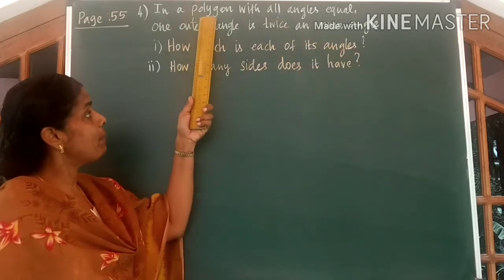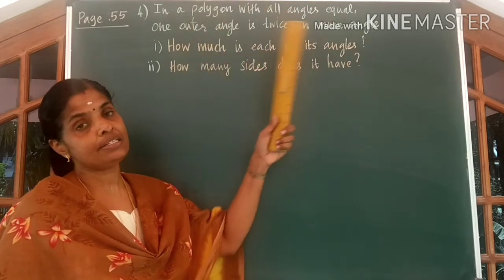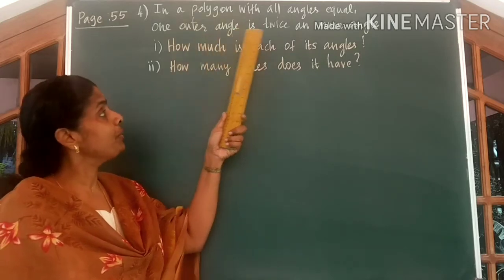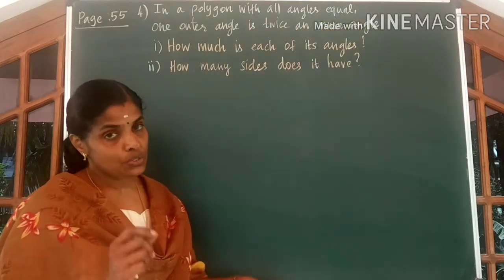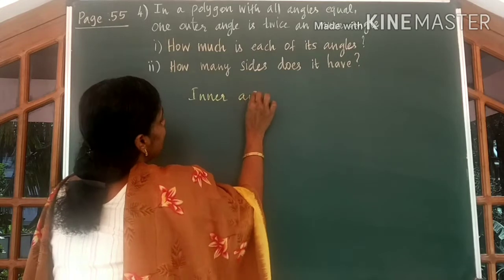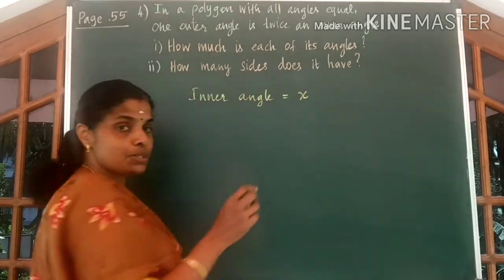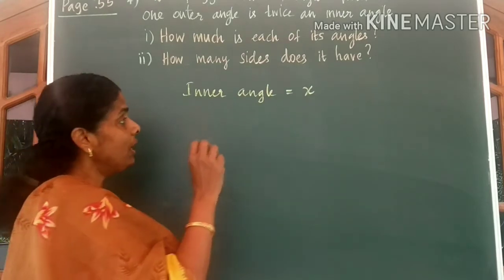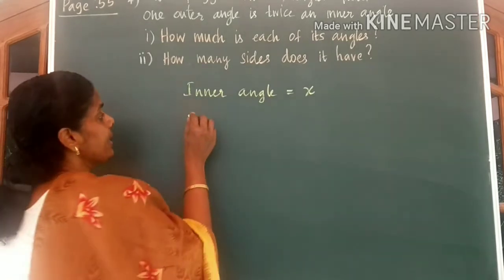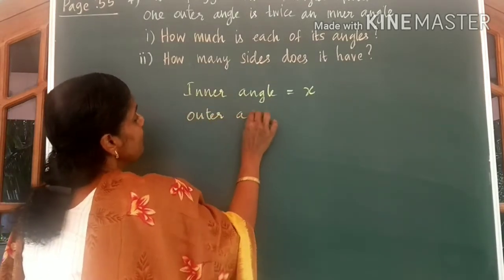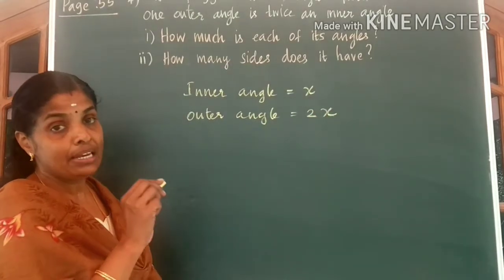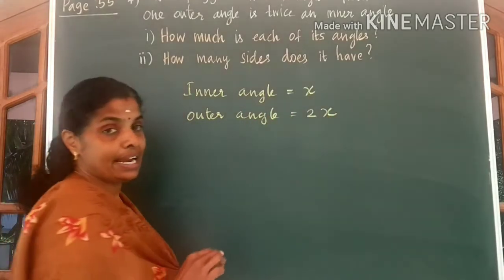We are talking about a polygon in which all angles are equal. One outer angle is given to be equal to twice an inner angle. Let us consider the inner angle to be equal to x, because we are not given a value. We know all the inner angles are equal. Now, let us write the outer angle — we can write the outer angle to be equal to 2x, because it is given the outer angle is twice an inner angle.